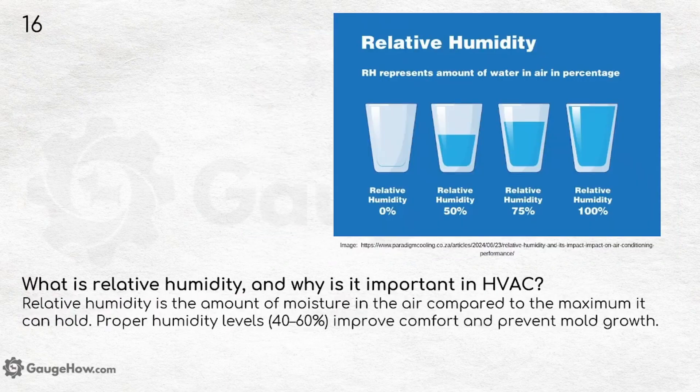What is relative humidity and why is it important in HVAC? Relative humidity is the amount of moisture in the air compared to the maximum it can hold. Proper humidity levels of 40–60% improve comfort and prevent mold growth. The figure illustrates the difference between 0% and 100% relative humidity.